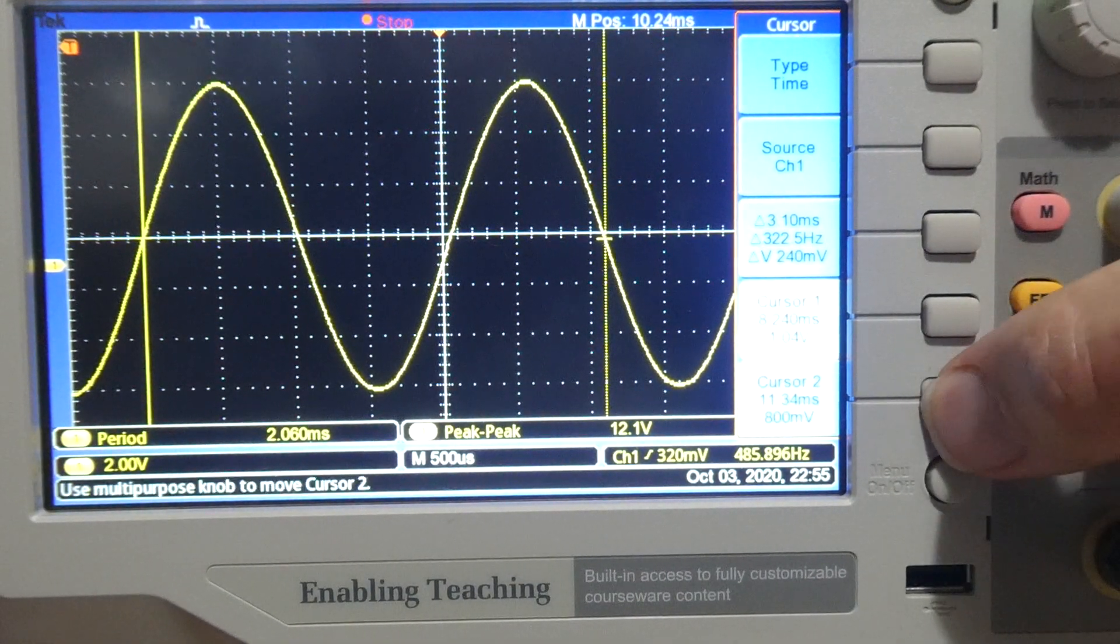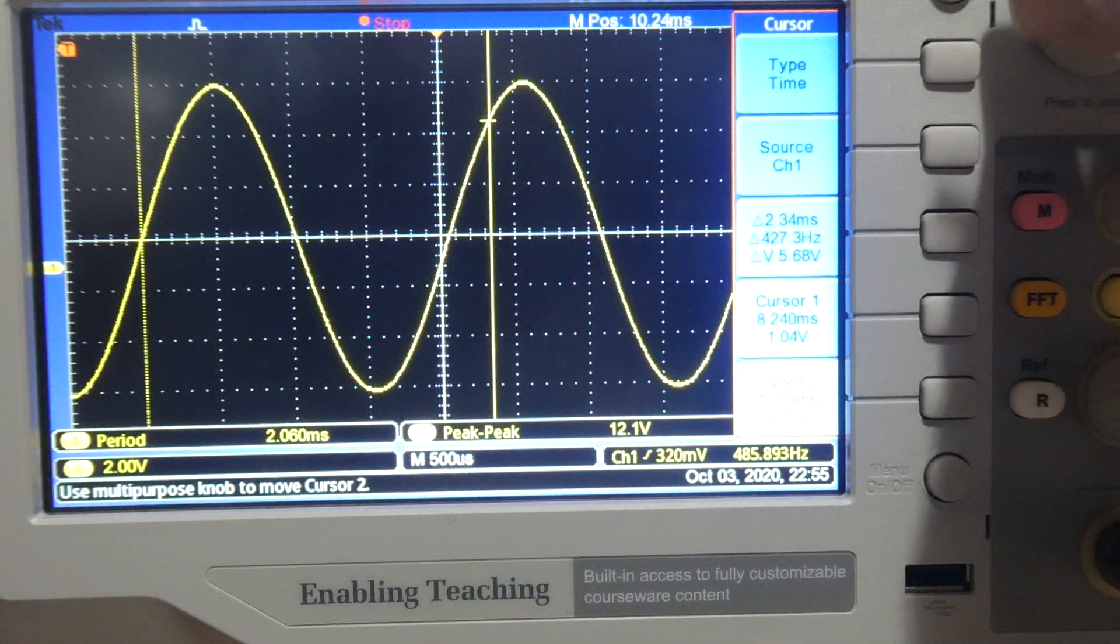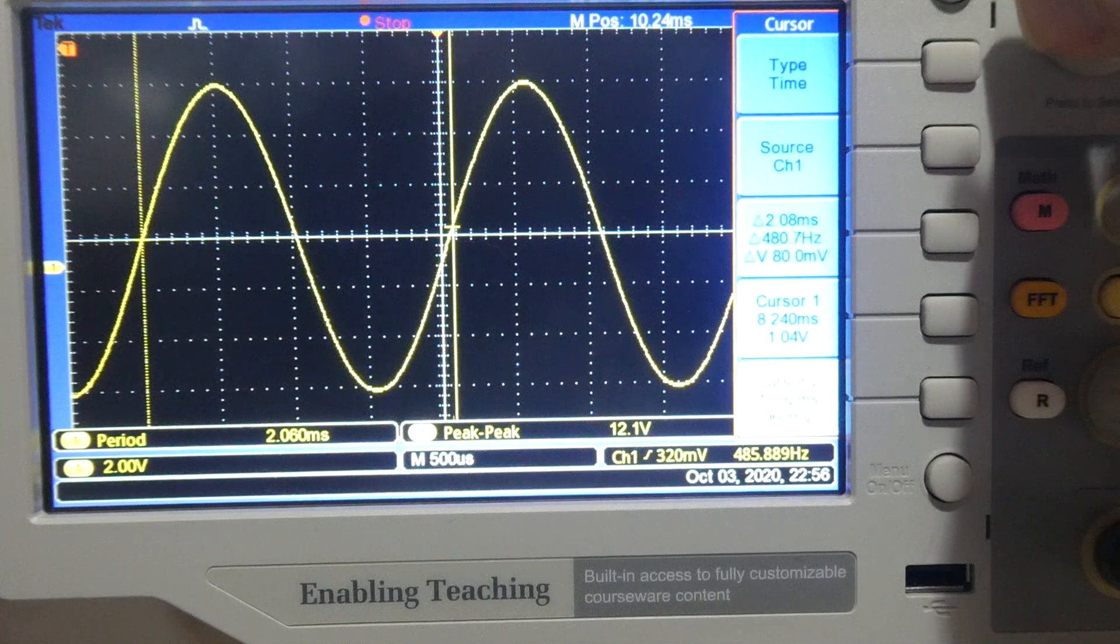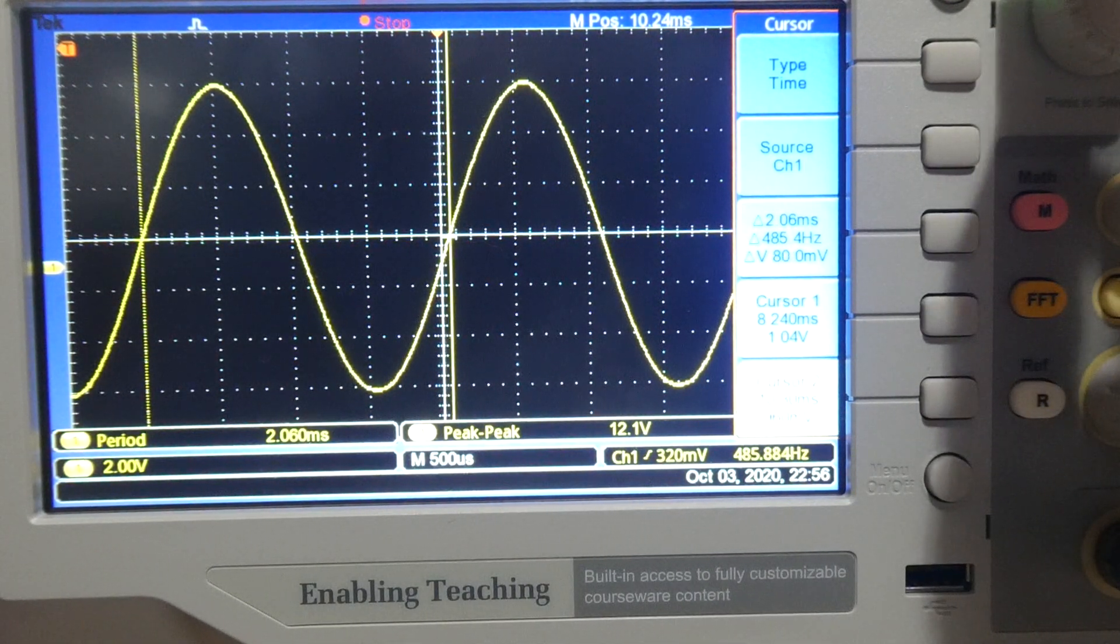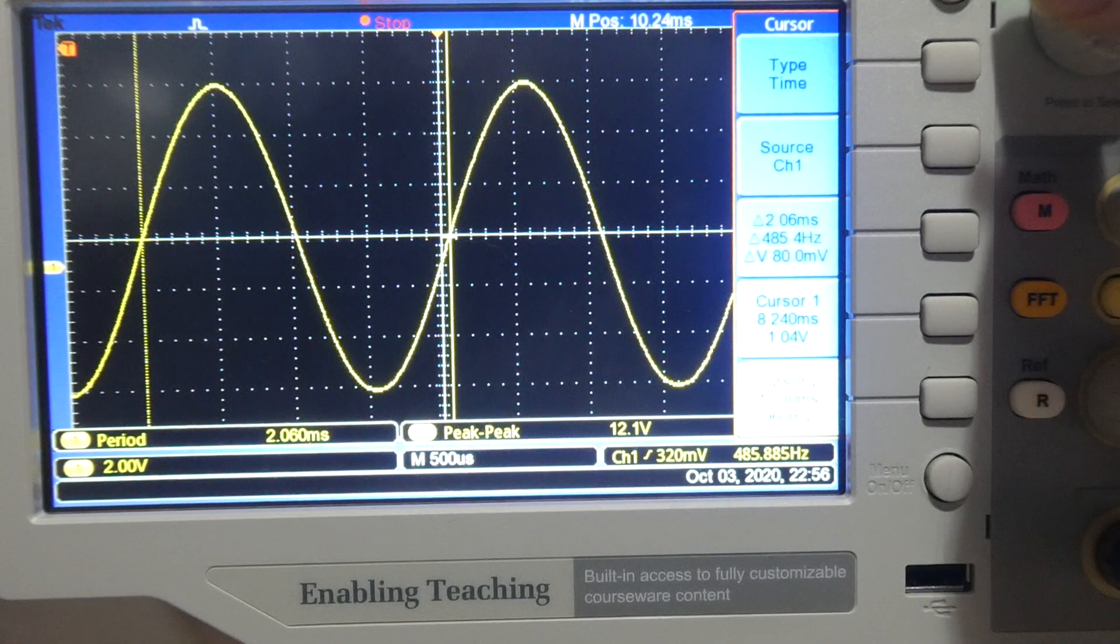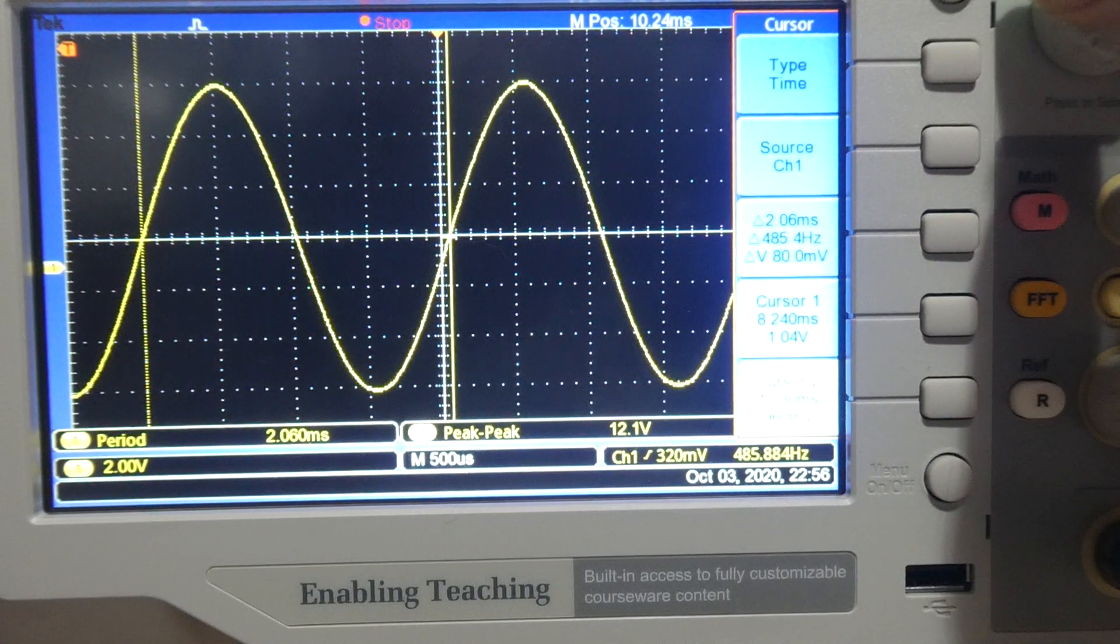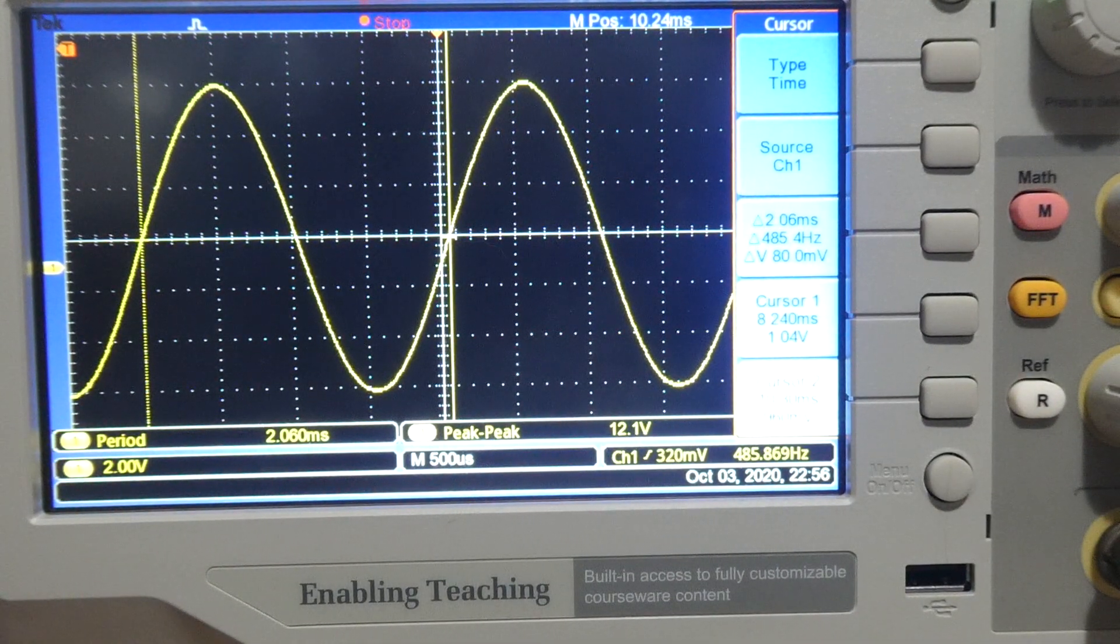So if we accept that, go to my second cursor, and now where the waveform hits the horizontal at around about 1.04 volts would be perfect. Can't quite get it. I've got a choice. 1.36, 960 millivolts. I'll take that.